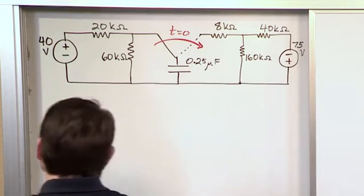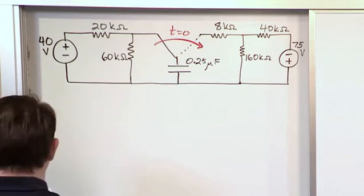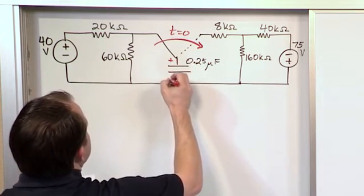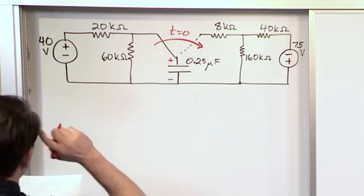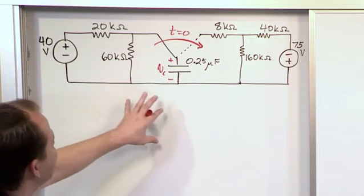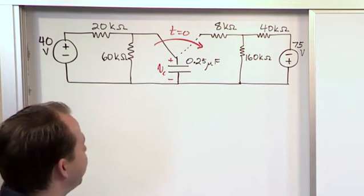First thing let's work on is writing down the equation. Now we have gone into this in great detail here. What we're trying to find in this problem is V sub C, the voltage across the capacitor. What we want to calculate in this problem is what is the voltage across the capacitor at time t greater than zero.